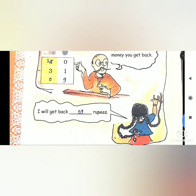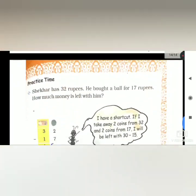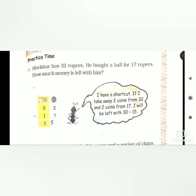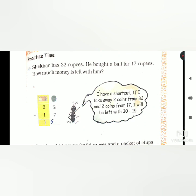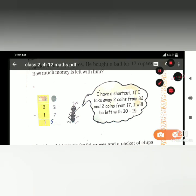Kareem has 32 rupees. He bought a ball for 17 rupees. How much is left with him? We write 32 minus 17. We'll make this 12 and make 3 into 2, carry one. 12 minus 7 is 5, 2 minus 1 is 1. Answer is 15.